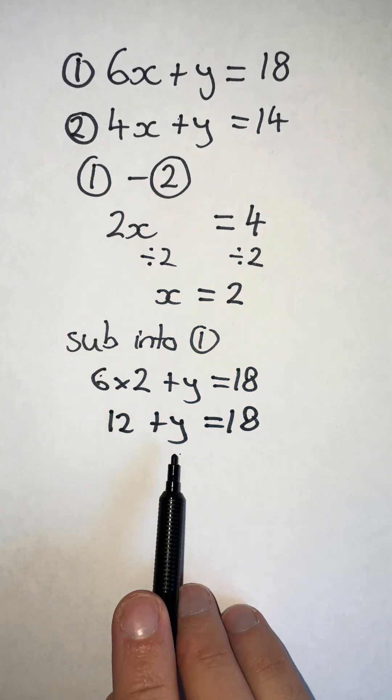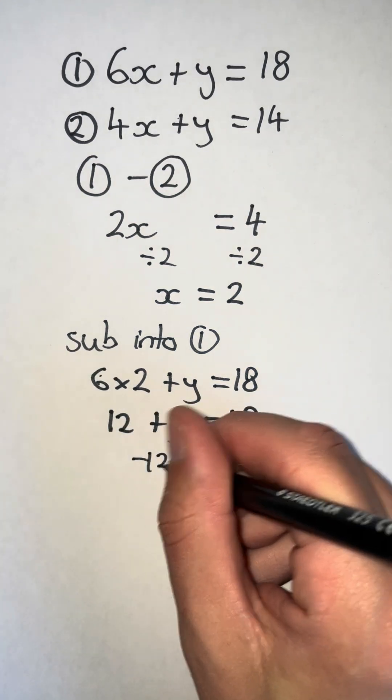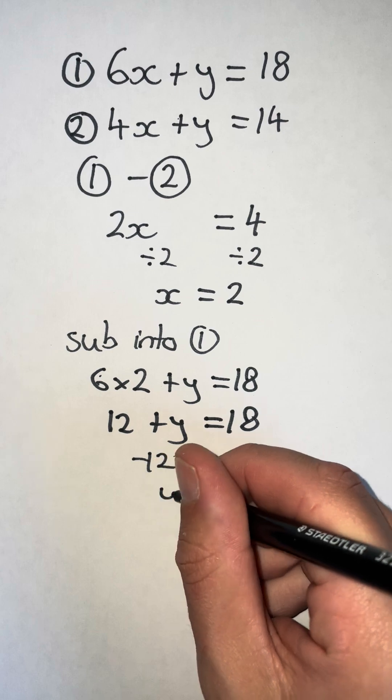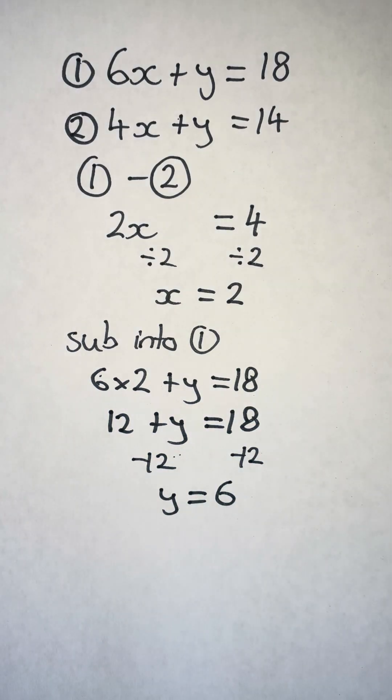And then I can solve this equation for y by subtracting 12 from both sides. 18 minus 12 is 6, so y is equal to 6.